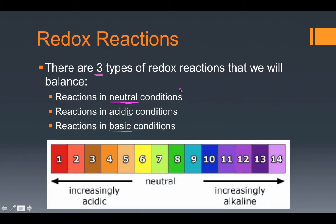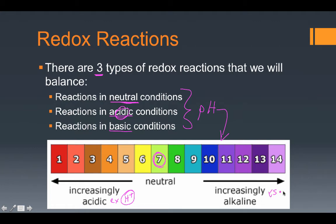All of this is referring back to the pH of the solution that you're dealing with. We have a pH scale at the bottom, remembering that neutral denotes a pH of right around 7. Below 7 means increasingly acidic — we're going to have an excess of H+ ions available during the reaction, which will be very important when balancing acidic redox reactions. Increasingly alkaline or basic means we have an excess of the OH⁻ ion available, which will be very valuable when balancing basic reactions. But for today, we're going to focus on reactions in the neutral part of the spectrum.